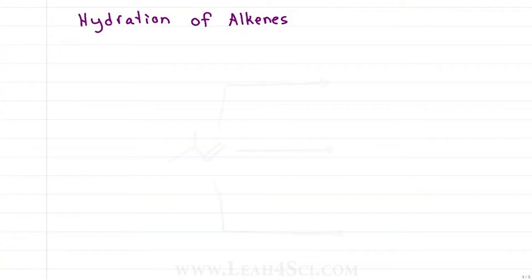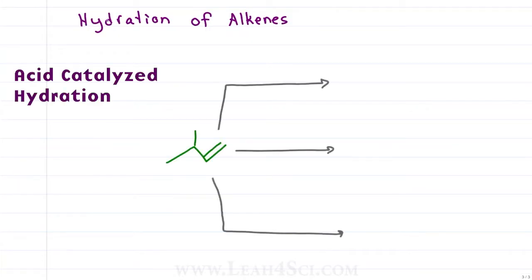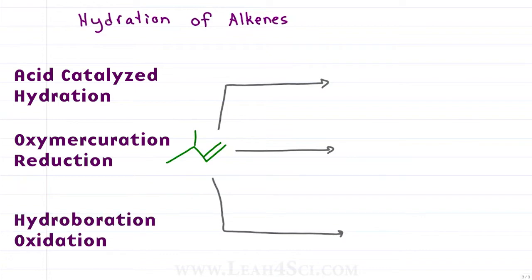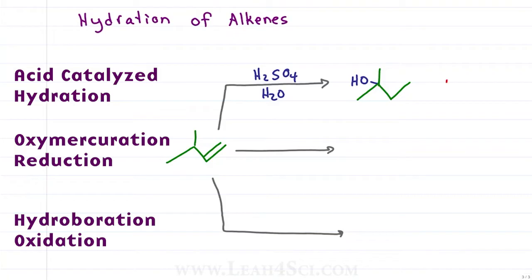We have three types of hydration reactions: acid catalyzed hydration, oxymercuration-reduction, and hydroboration-oxidation. Notice that I moved the pi bond over to account for a potential carbocation rearrangement. In acid catalyzed hydration we use acid in the presence of water to give us a carbocation intermediate. The alcohol winds up on the tertiary carbon due to the carbocation intermediate and hydride shift, following Markovnikov's rule.